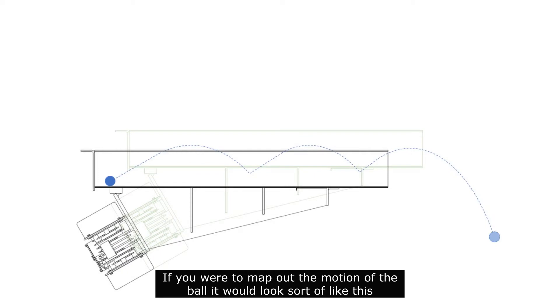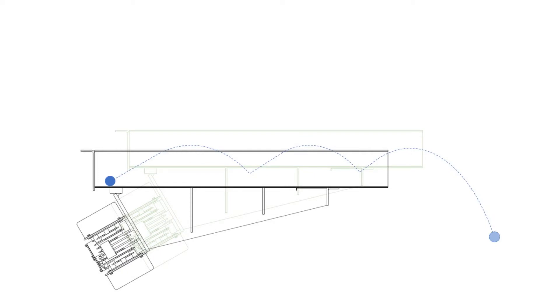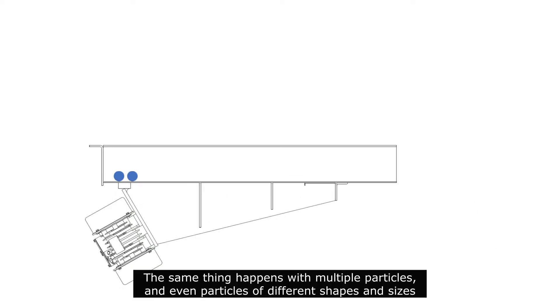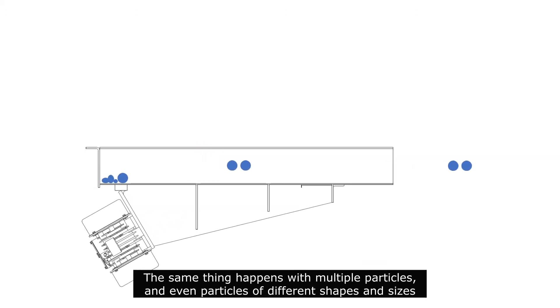If you were to map out the motion of the ball, it would look sort of like this. The same thing happens with multiple particles and even particles of different shapes and sizes.